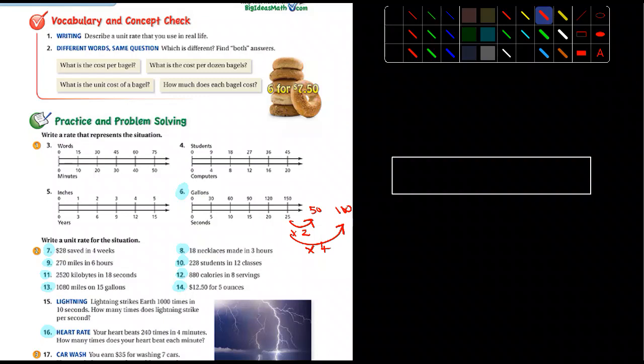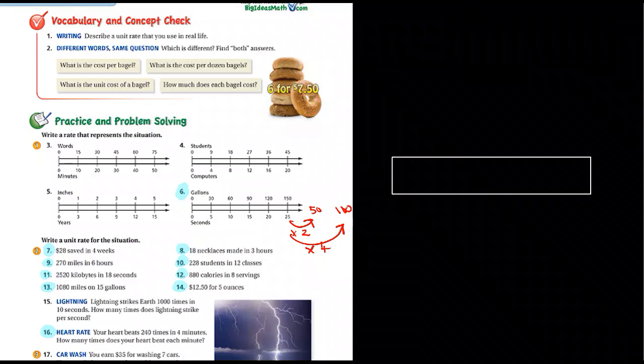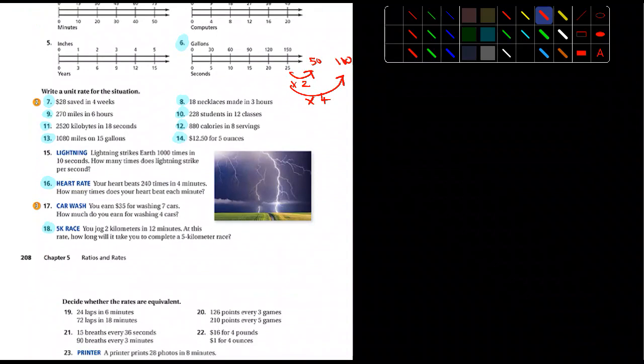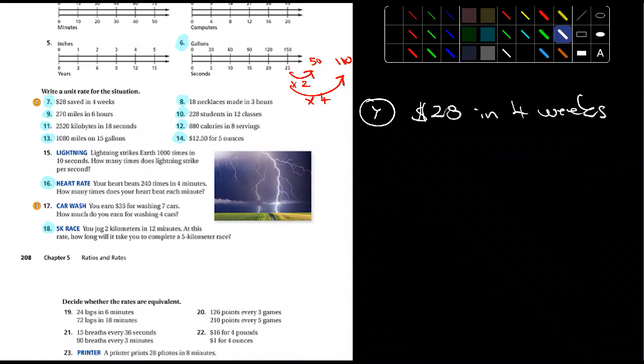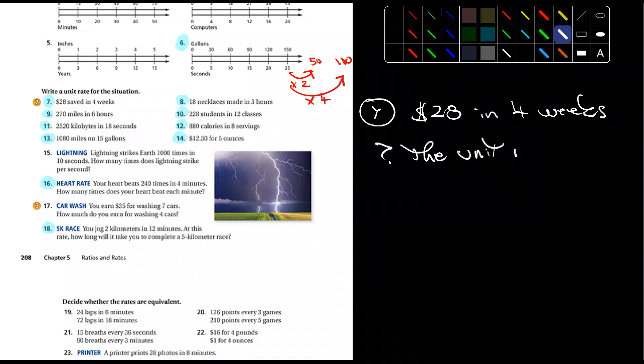Ms. Harley, you understand what I'm asking? Keep your eyes up here and not worry about your pens. Let's go down a little bit further. Number 7, 8, 7 through 14, I want you to do. It says, write a unit rate for this situation. So, I'll do number 7 with you guys. So, it says $28 in four weeks. So, how would we figure out the unit rate?